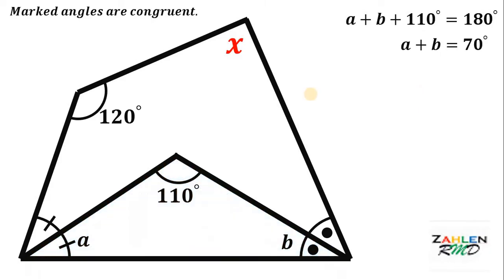Let's consider this quadrilateral. Now, take note that all marked angles are congruent. It follows that this angle must be also a and this angle must be angle b.